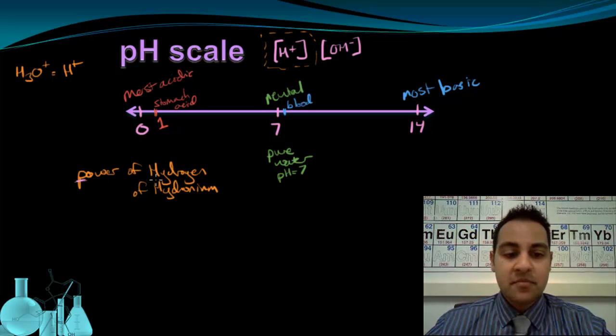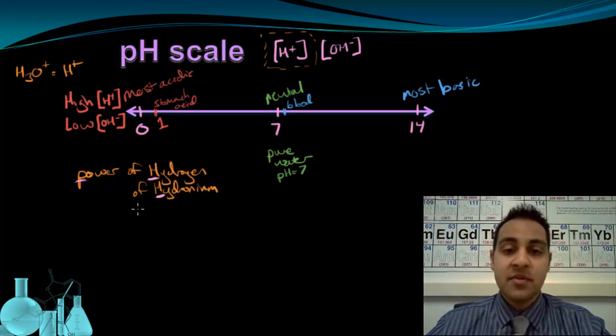But that's where the pH comes from, lowercase p, capital H. And these two ions, H+ and OH-, exist in a state of balance. So down here, where it's most acidic, I have a high amount of H+, or high concentration of hydrogen ions, but I also have a very low concentration of OH-, because if one goes up, the other one goes down.